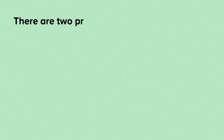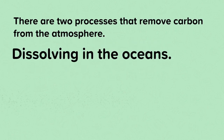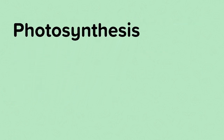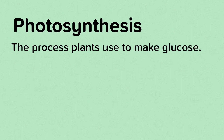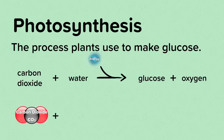There are also two processes that remove carbon from the atmosphere: dissolving in the oceans and photosynthesis. Photosynthesis is the process plants use to make glucose. Carbon dioxide reacts with water to produce glucose and oxygen. Light energy is needed to start the reaction.